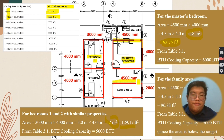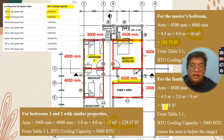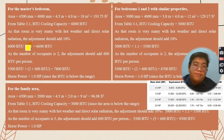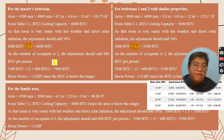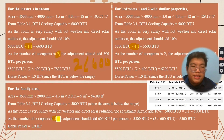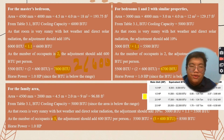For the family area, which is 4.5 meters by 2 meters, the area in square feet is 96.88 square feet. Since it is out of the range, I assume the minimum value of 5,000 BTU. After calculating adjustments by multiplying by 1.1 and adding occupant adjustments — 2 times 600 for the bedrooms and 5 times 600 for the family area — the BTU results are: master bedroom 7,800 BTU, bedroom 1 and 2 at 6,700 BTU, and family area at 8,500 BTU.